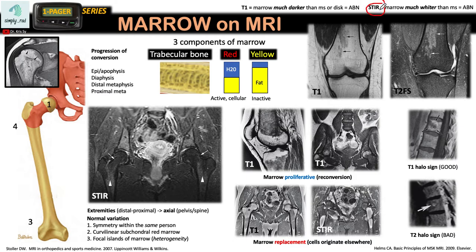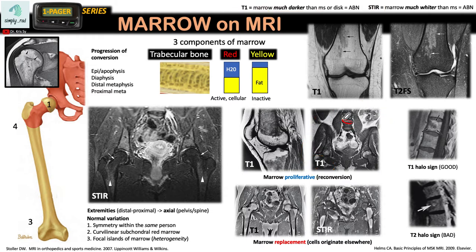On T1 and fat-sat, look out for marrow that is much darker than the adjacent muscle — that is abnormal. In this example, the marrow within this vertebra has a signal much darker than the adjacent disc, meaning it has lost its fatty component within the red marrow. In this case the patient had a marrow proliferative disorder — a reconversion of fat into red marrow due to the body's increased need.